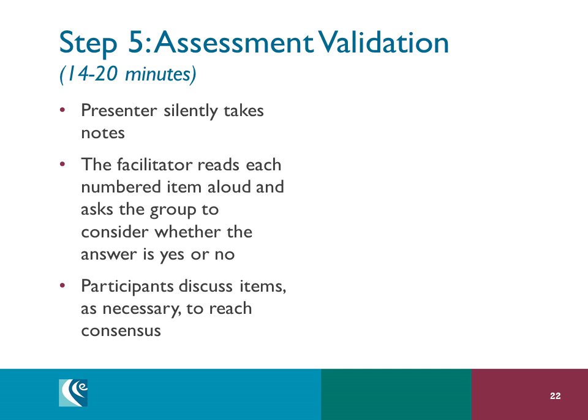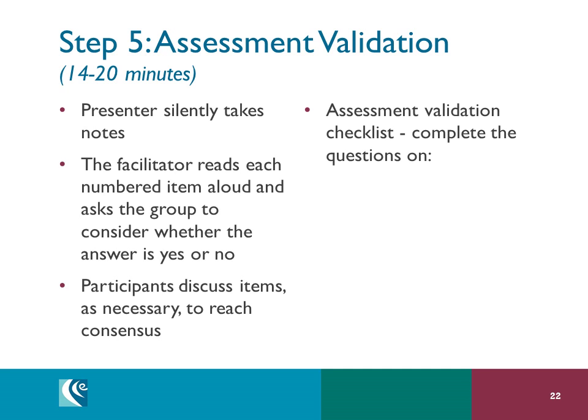In step five of the task validation process, the group is asked to use the assessment validation checklist to evaluate the task. During this process, the presenter sits silently and takes notes while the facilitator reads each question aloud. The group should come to consensus on whether the answer to each question is a yes or no, stopping only if they are unable to gain consensus. The timekeeper should keep a close watch on the clock to ensure that each step is covered. Before we get into the assessment validation checklist, let's review each of the areas that you'll be examining.